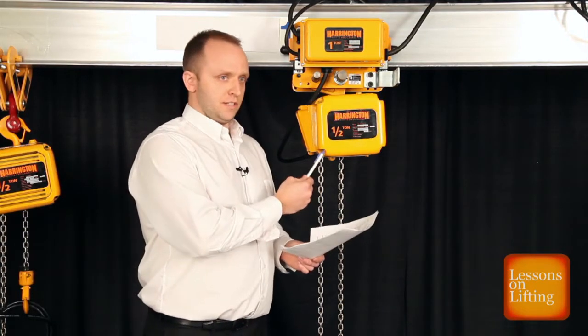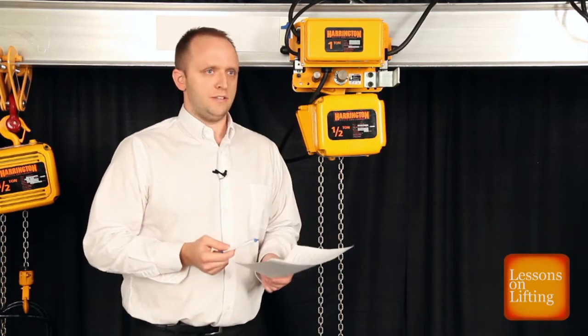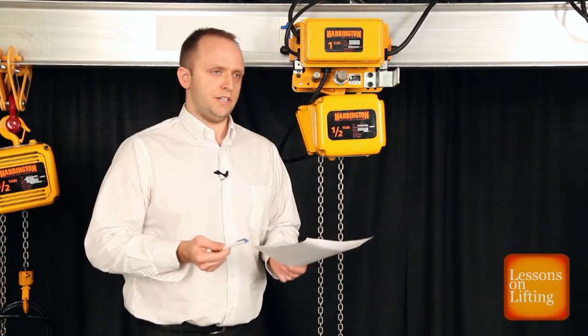Another way to tell is to actually physically look inside the unit, underneath either one of the covers. If you see a VFD inside there, that will tell you that you have a dual-speed unit and a voltage change is not possible.